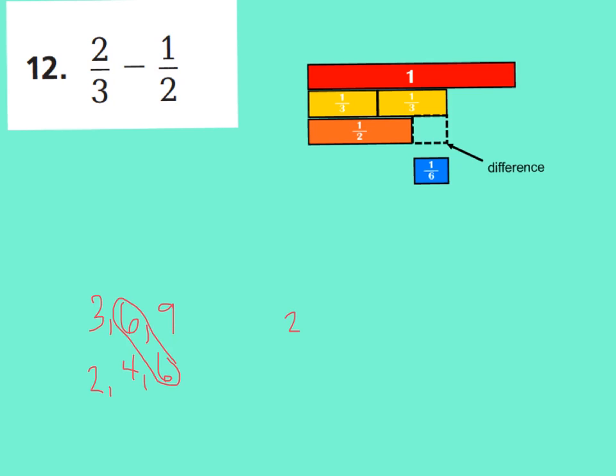So, if I had 2 thirds, that would equal 4 sixths. Because, 3 times 2 is 6, and 2 times 2 is 4. Let's look up here. Imagine I could put 4 of these 6 pieces right up here. 1 sixth, 2 sixths, 3 sixths, 4 sixths. Now, if we subtract 1 half, remember, 1 half is equal to 3 sixths.